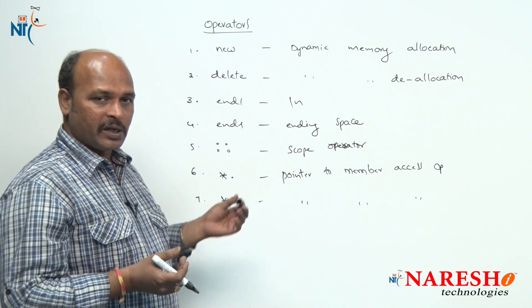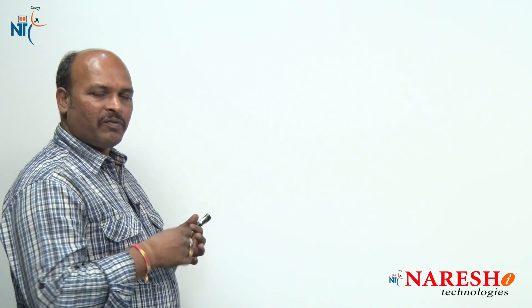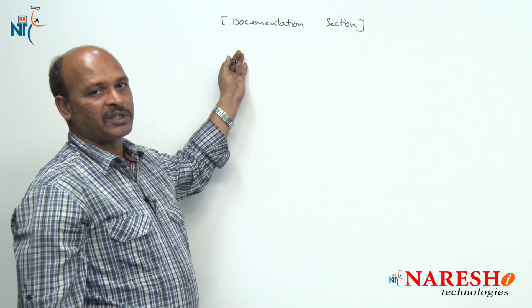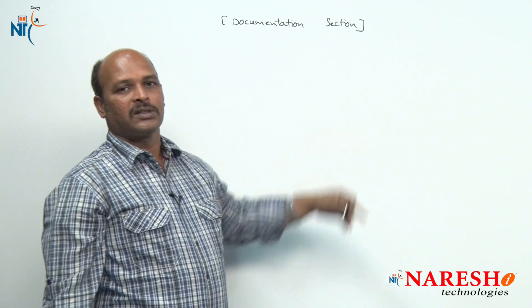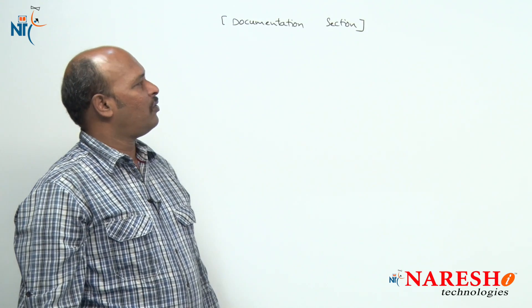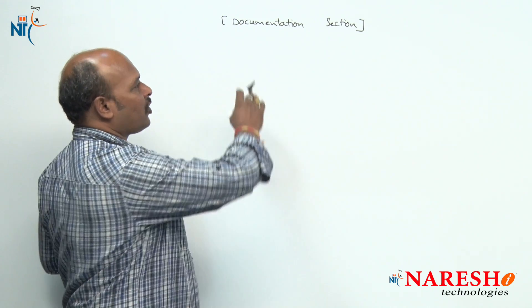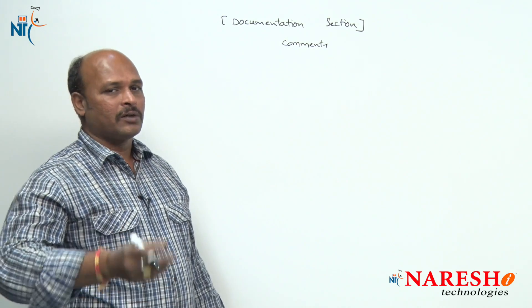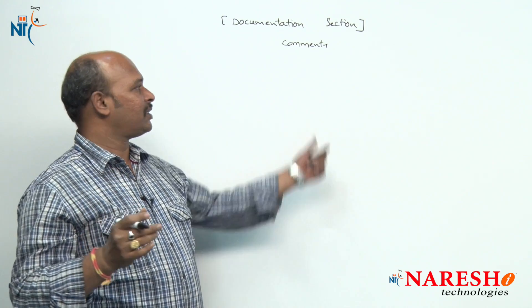Now I am going to explain the programming structure of C++ — that means how to write a program in C++ and what structure we need to follow. Every programming language has a particular structure that must be followed. The first part of a C++ program is the documentation section. Generally, square brackets represent optional parts. The documentation section is where we write comments.